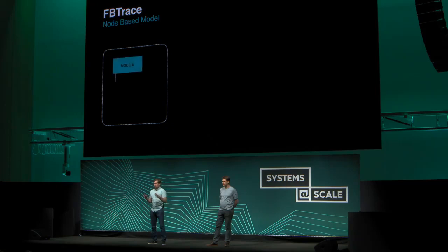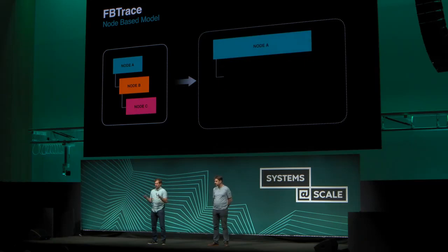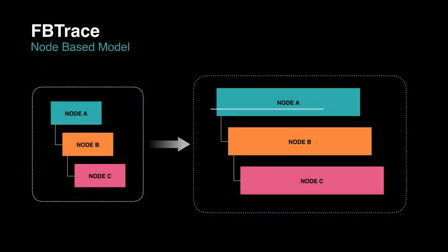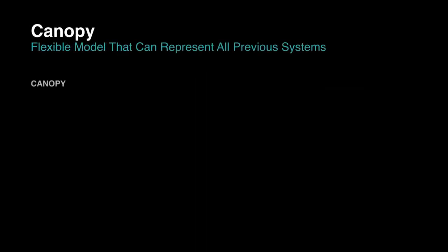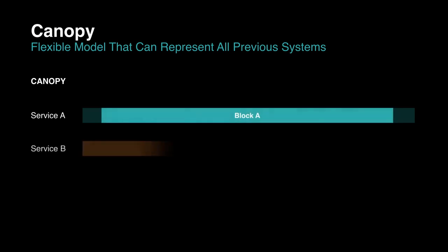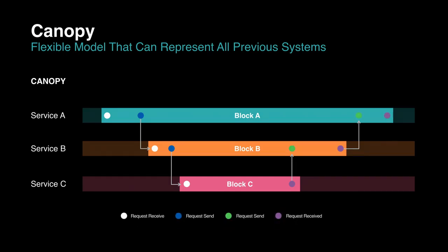We wanted to handle both. We started with a distributed tracing system called FB Trace, very similar to what Yuri described in terms of data model and instrumentation. But that data model wasn't flexible enough to represent all the different tracing systems, especially the more detailed ones. So what we ended up doing is coming up with a unified data model that could represent both the really detailed traces and the broad traces — it's called Canopy. There's actually a really good paper about it.